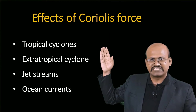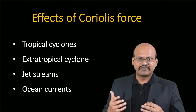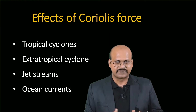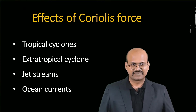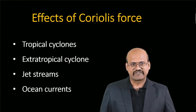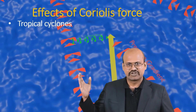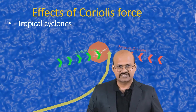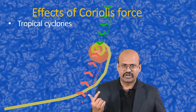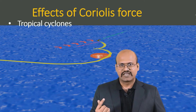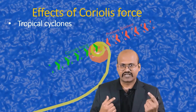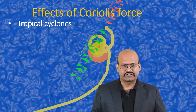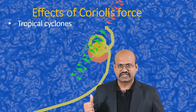Now here are some major weather phenomena in which Coriolis force is involved — each of these phenomena would not be possible without Coriolis force. The first is tropical cyclones. In a tropical cyclone, it is the Coriolis force which balances the pressure gradient and generates a circulating motion. The wind circulates around the low pressure area because of Coriolis force, and this is how a tropical cyclone is produced.